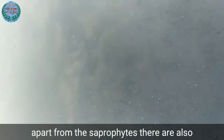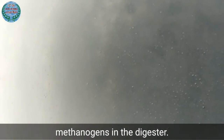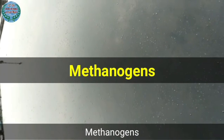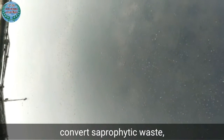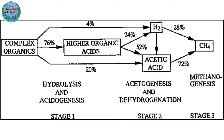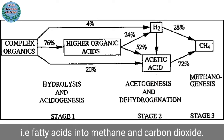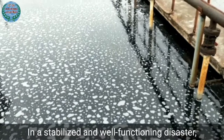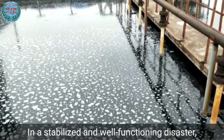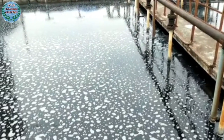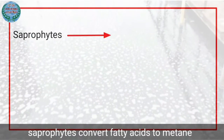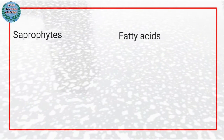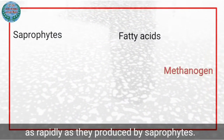Apart from the saprophytes, there are also methanogens in the digester. Methanogens convert saprophytic waste — that is, fatty acids — into methane and carbon dioxide. In a stabilized and well-functioning digester, methanogens convert fatty acids to methane as rapidly as they are produced by saprophytes.